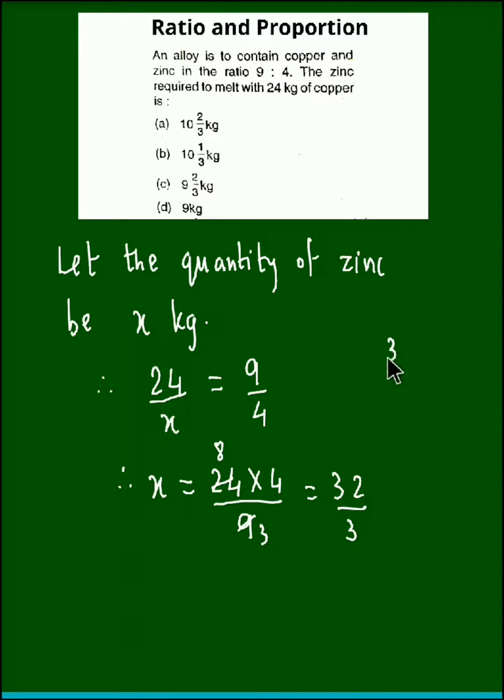Now, 32 upon 3 could be expressed as, if we divide 32 by 3: 3 into 10 is 30, remainder is 2. So we could express the value for x as 10 2 by 3.